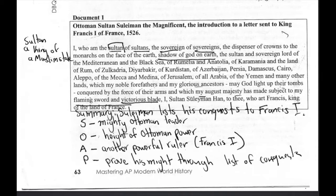This is my annotation of Document 1, which is from Ottoman Sultan Suleiman the Magnificent, addressed to King Francis I of France in 1526. I felt confident enough about this document that in addition to doing the mandatory one-sentence summary — 'Suleiman lists his conquests to Francis I' — I also start to do SOAP analysis, because I know the purpose of the document. Suleiman the Magnificent is flexing, so to speak.